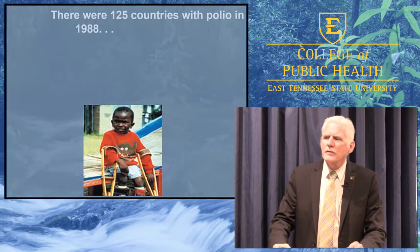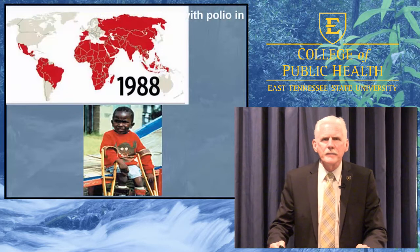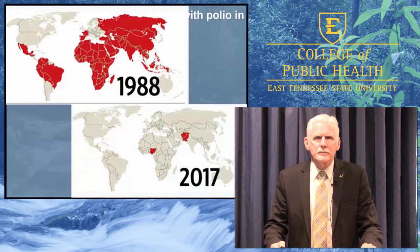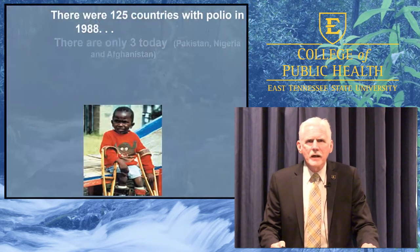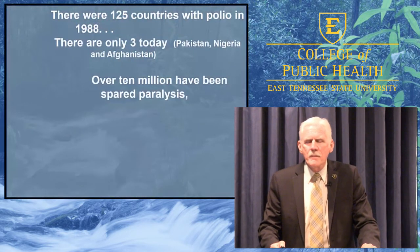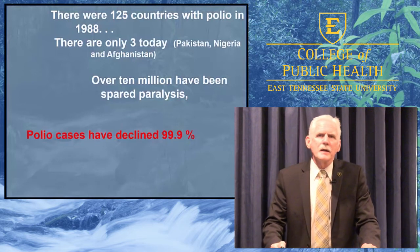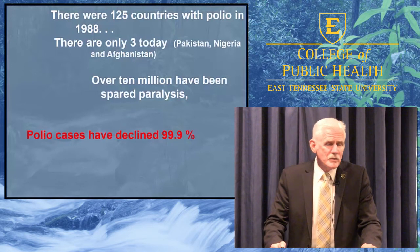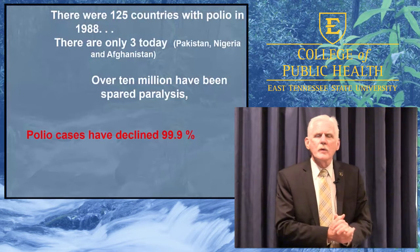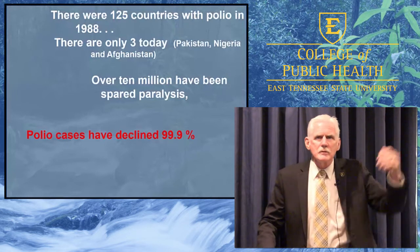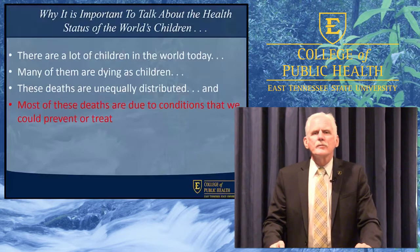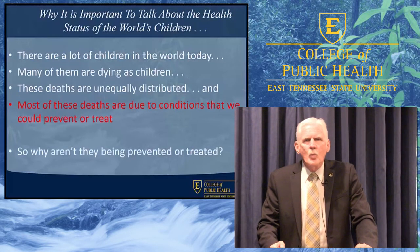When they started in 1988, polio existed in 125 countries around the world. By last year, less than 30 years later, it's down to three countries. During that time, it's estimated that 10 million cases of paralysis have been prevented, and polio has been reduced by 99.9%. Back in the 80s there were people saying this is too big a challenge — there are cases of polio all over the world, in the most isolated places, just like diarrhea, just like pneumonia. If we could prevent and treat these conditions, why aren't we? Why aren't they being prevented or treated?